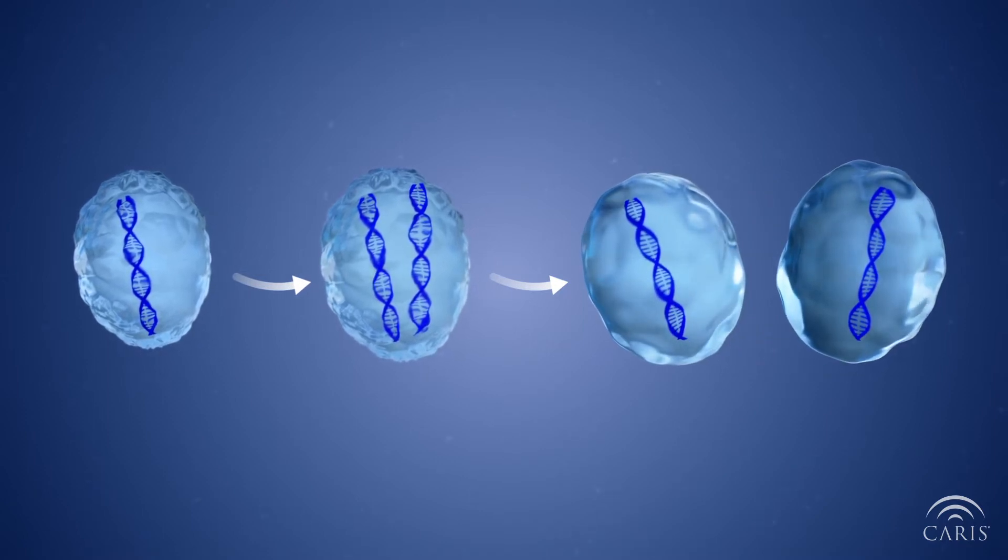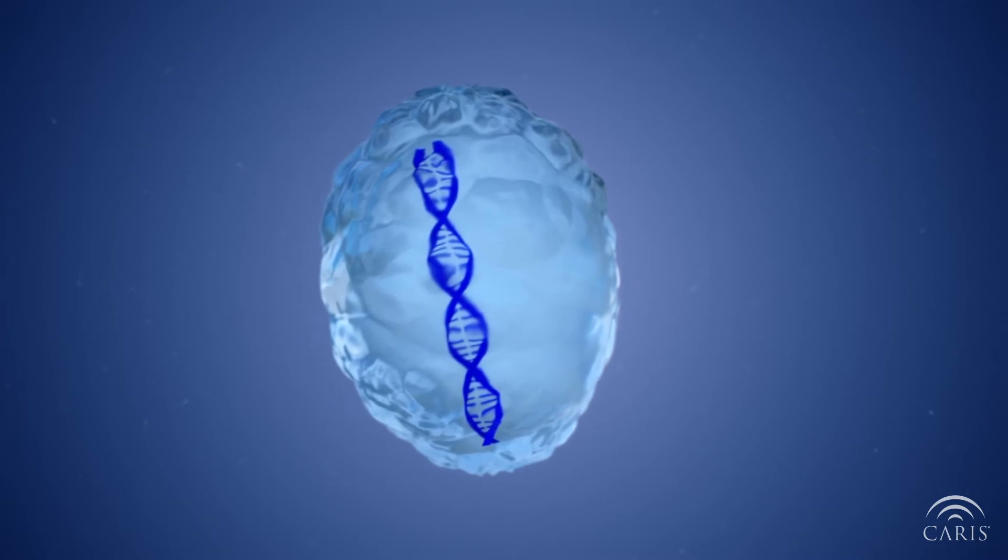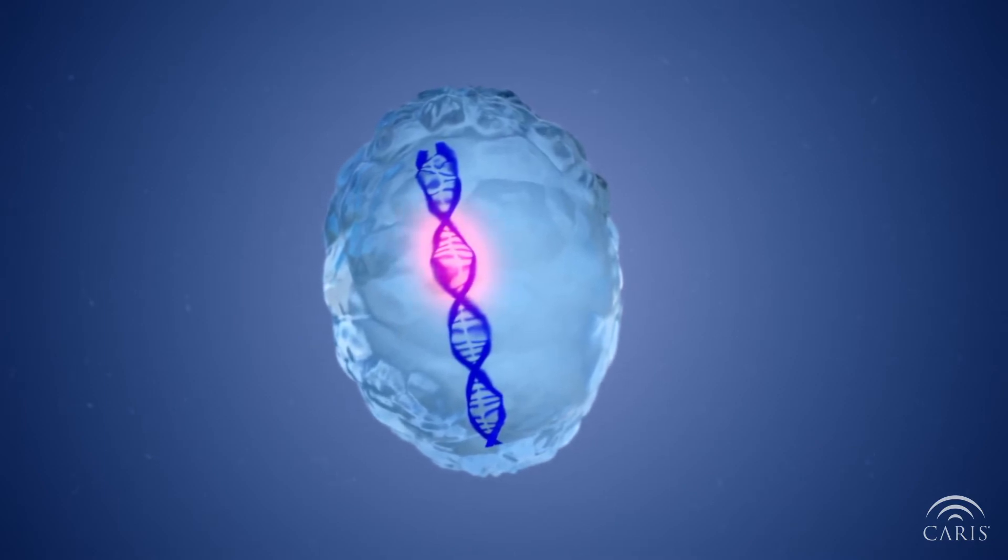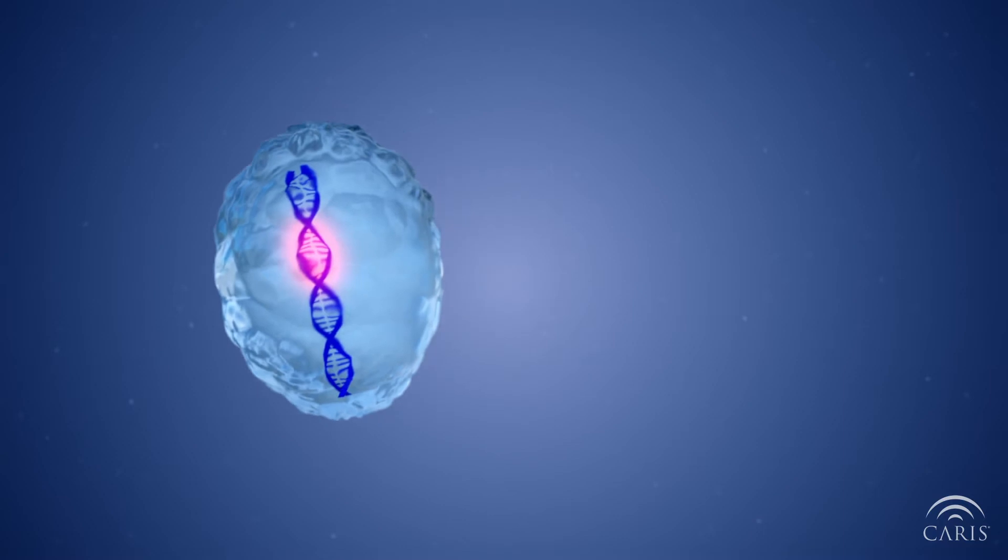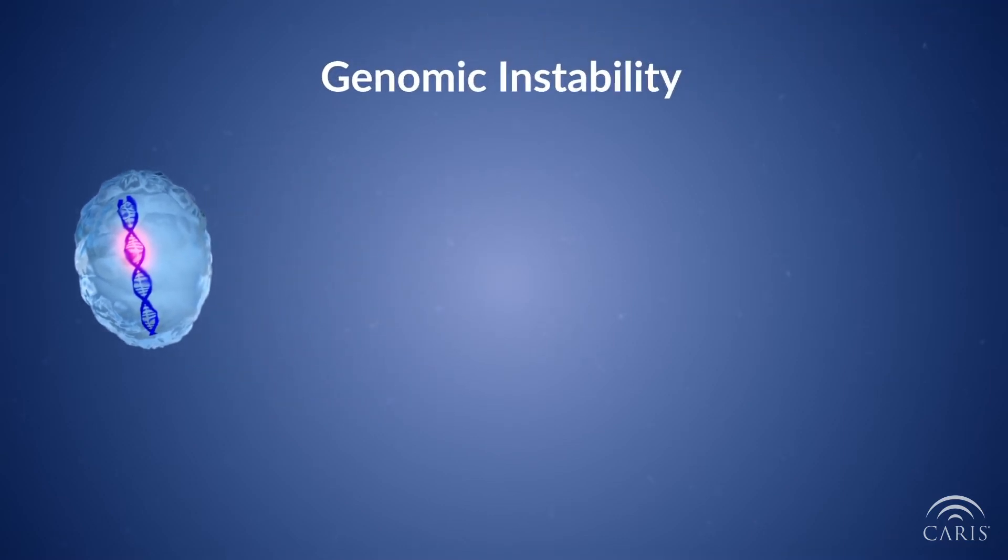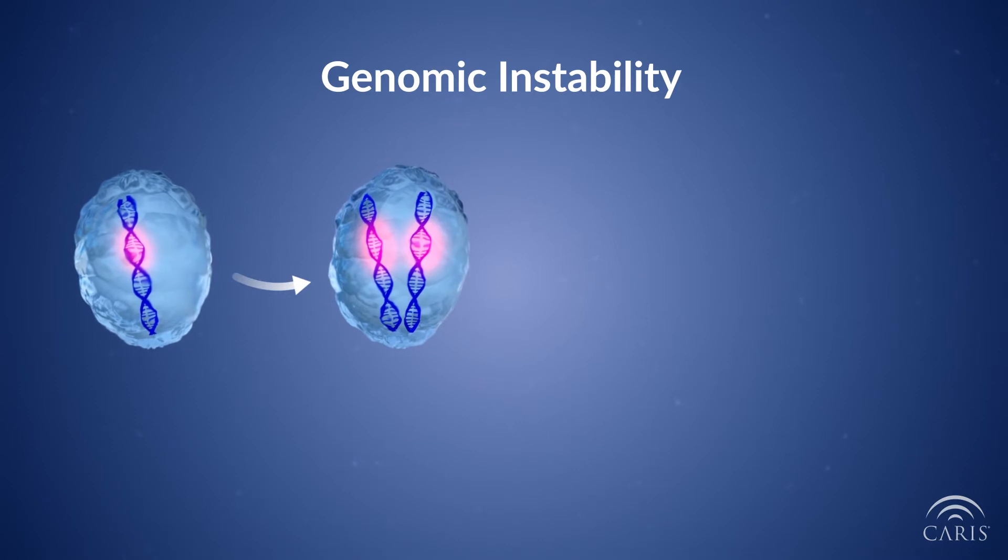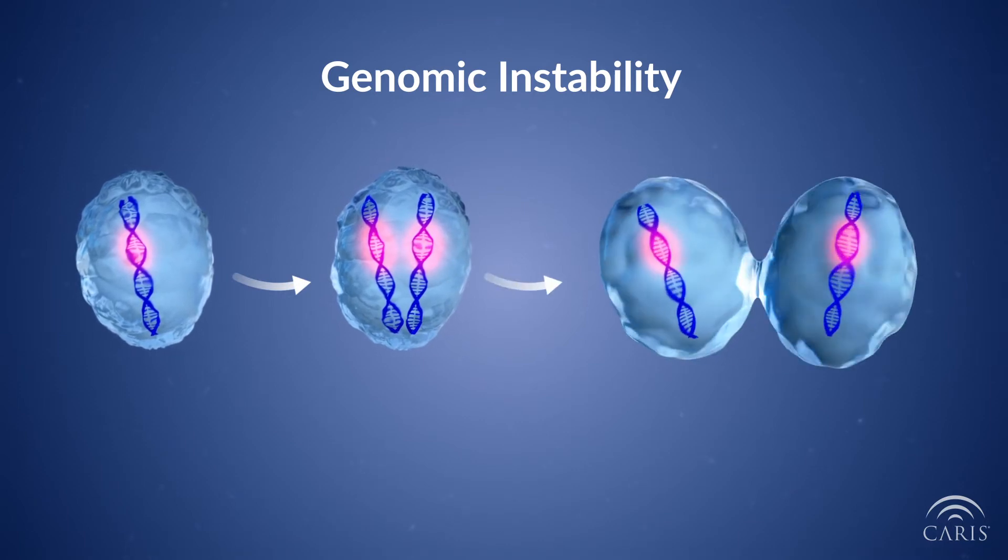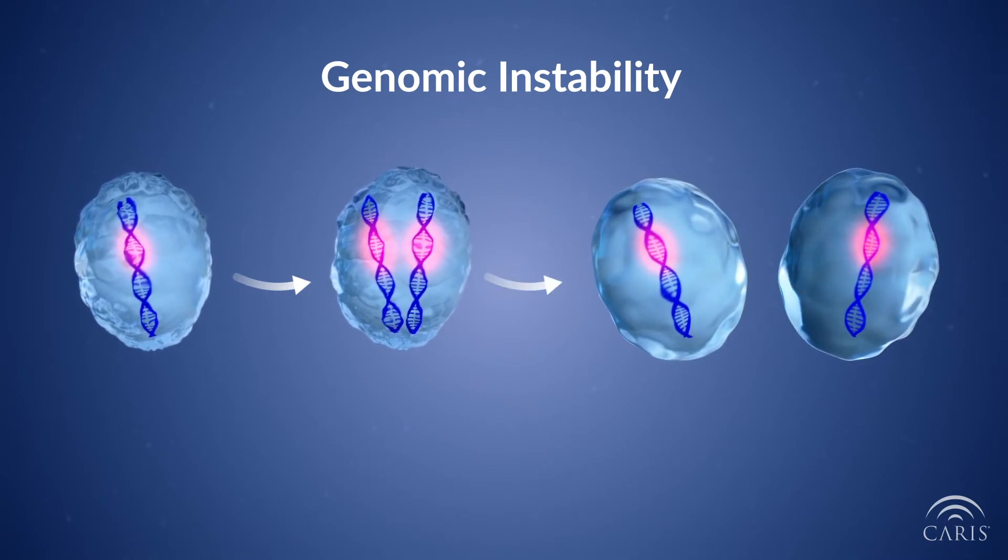What happens when things go wrong? Defects in cell division or in the DNA surveillance and repair processes can result in something called genomic instability. Genomic instability is an increased likelihood for mutations and alterations to occur and remain in the DNA as cells divide.